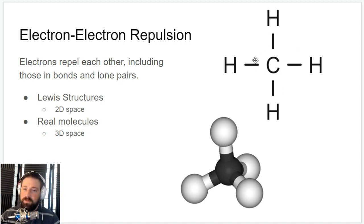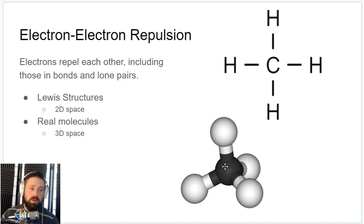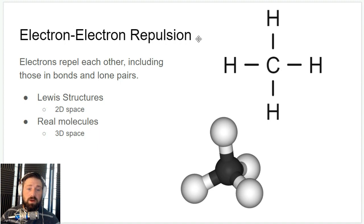We don't live in a 2D world. If we include a third dimension — the forward and backward dimension — then we can spread out the electrons in the bonds even more, and you get something that looks like a 3D molecule. I'm going to go through and talk about the different types of geometries that can be made because of this electron-electron repulsion.